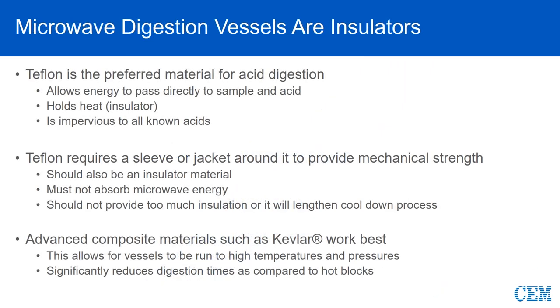Microwave digestion vessels should be insulators. Teflon is a preferred material because it allows the microwave energy to pass through but does not absorb the energy. This focuses all of the microwave energy on the sample, yielding faster and more controlled digestions. Teflon vessels require a sleeve for mechanical strength. This sleeve is also an insulator, however less so than Teflon, which allows the vessel and sample to cool more rapidly.